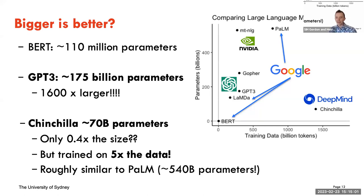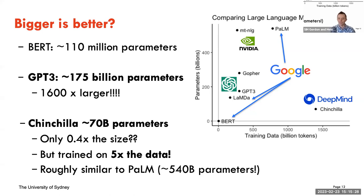Then we have Google's LaMDA and GPT-3. GPT-3 is the most advanced of OpenAI's publicly accessible models — even though the code isn't released, you can use it via an API. The most advanced version is at 175 billion parameters, which is 1,600 times larger than BERT. It requires multiple expensive top-of-the-line GPUs — basically a supercomputer — to run.